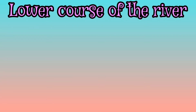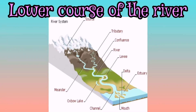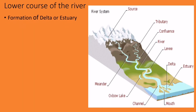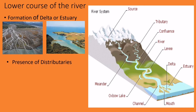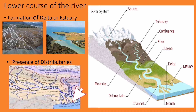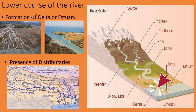Coming to the lower course of the river — this is where the river joins a larger water body like a sea or ocean. For our board exam, maps G43-S10 and G43-S7 do not have any river in its lower course, so you need not worry about that. But for the sake of theory: usually in the lower course, the river forms a delta or an estuary, and there will be a lot of distributaries. Look at the river Ganga — when it comes to the mouth of Ganga, you can see many deltas and the river distributing its water through many channels, which are called distributaries.